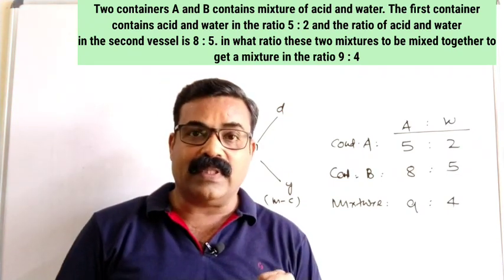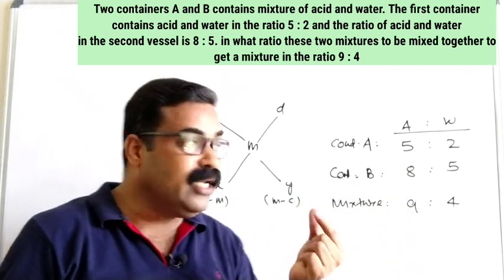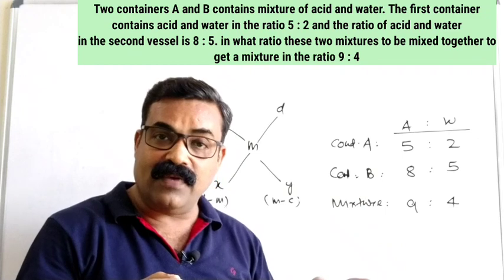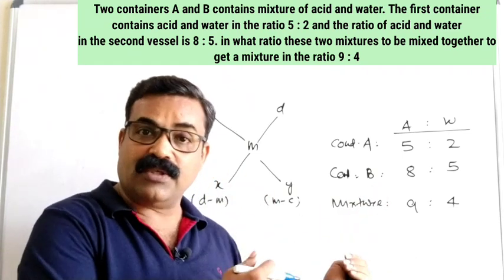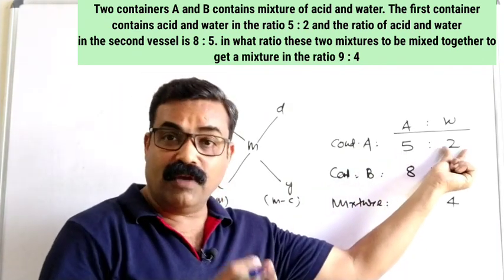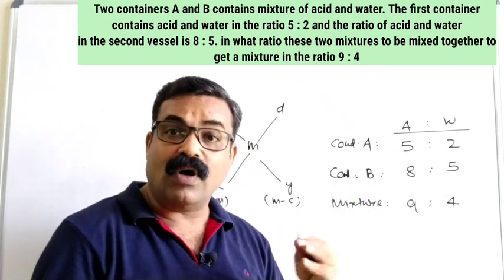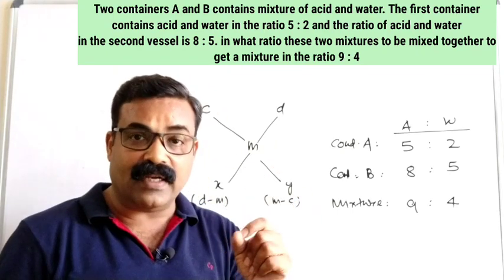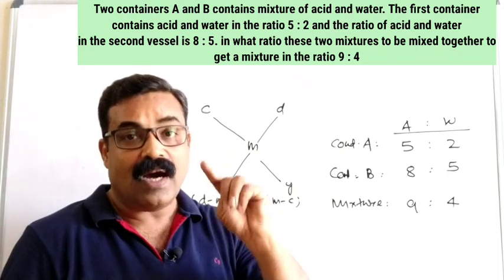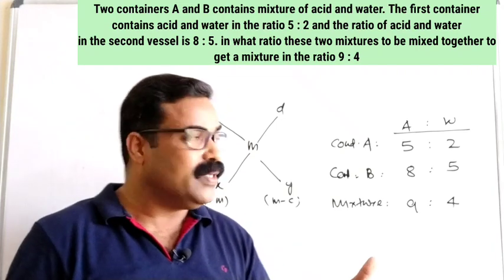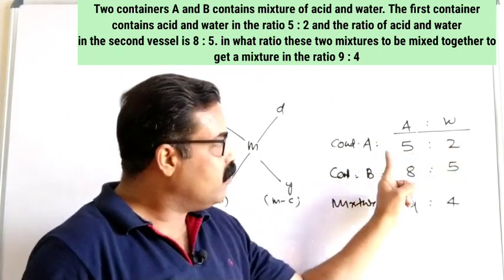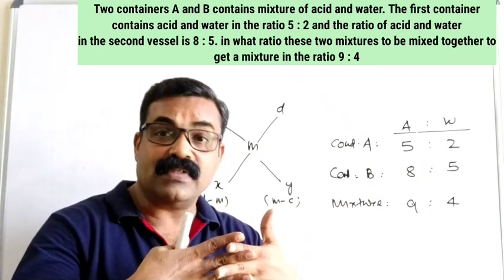The key question is: when ratios are given, what values do we use in the allegation rule? If values are given in percentage, we remove the percentage sign and use the number. But here we have ratios like 5:2. The very important step is: consider only one side value out of the total. For example, consider only acid out of the total. In vessel A, acid is 5 out of 5+2=7, so acid is 5/7.